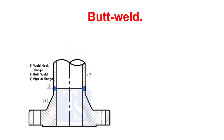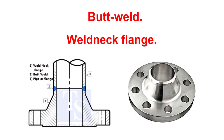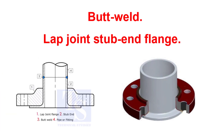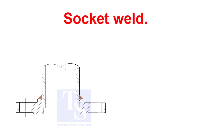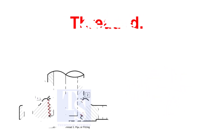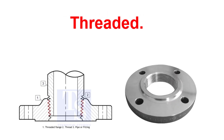Butt welded: weld neck flange is considered the best designed butt welded flange available in the piping industry. Another example of a butt weld joint is the lap joint stub end flange. Socket weld flanges use only one fillet weld on the outer side of the flange. Threaded flanges are joined to pipes by screwing the pipe and are used on piping systems that prohibit direct welding on the pipe. Usually, threaded flanges are used for galvanized piping.